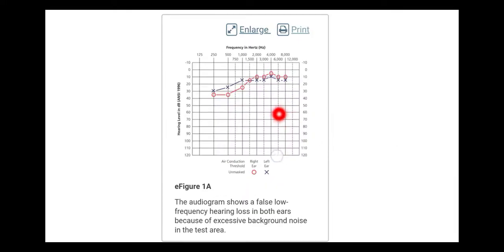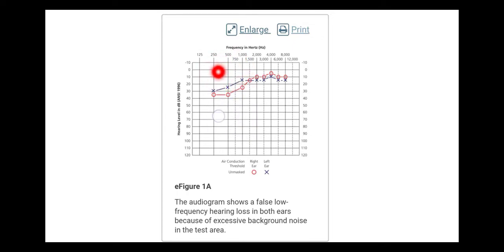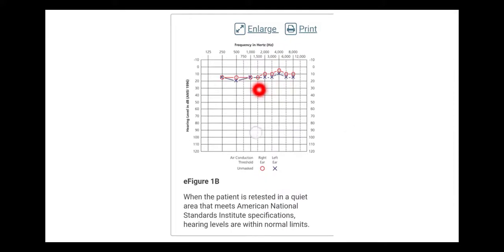In this audiogram we find a low frequency loss. Why has this happened? It shows a false low frequency loss because of excessive background noise in the test area. When the background noise is addressed in a perfect soundproof room - when the patient is retested in a quiet area that meets American National Standards Institute specifications - the hearing levels are found to be within normal limits.